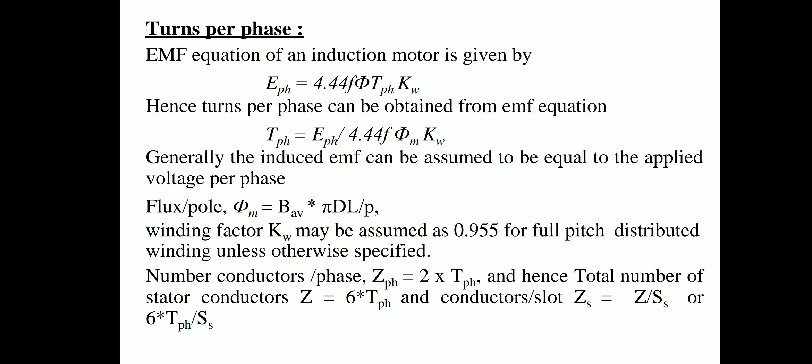The EMF equation of an induction motor is: Eph = 4.44 × f × φ × Tph × Kw. Hence turns per phase: Tph = Eph / (4.44 × f × φm × Kw). The induced EMF can be assumed equal to the applied voltage per phase. Flux per pole: φm = Bav × πDL / p. The winding factor Kw may be assumed as 0.955 for full pitch distributed winding unless otherwise specified.